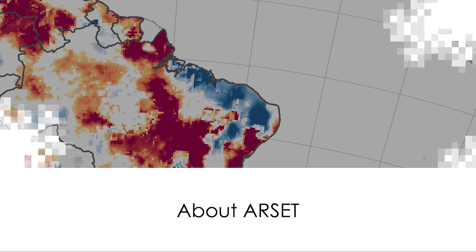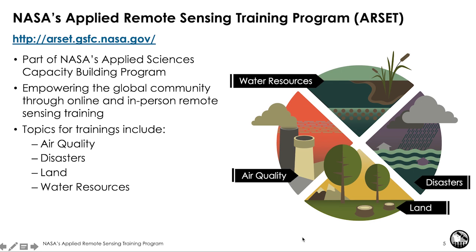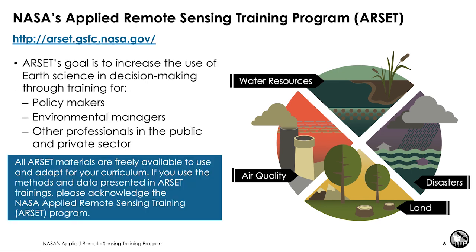ARSET is NASA's Applied Remote Sensing Training program, part of NASA's Applied Sciences capacity building program. It is set up to empower the global community through online and in-person remote sensing trainings across themes of air quality, disasters, land, and water resources. ARSET is focused on teaching and increasing the use of science data in decision making through trainings for policy makers, environmental managers, and other professionals in public and private sectors. All materials are free and open source, available from the ARSET website. If you use any ARSET material, you may modify it but we request that you acknowledge the ARSET program.